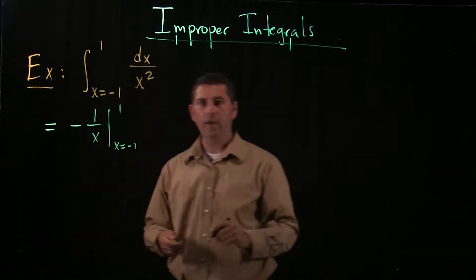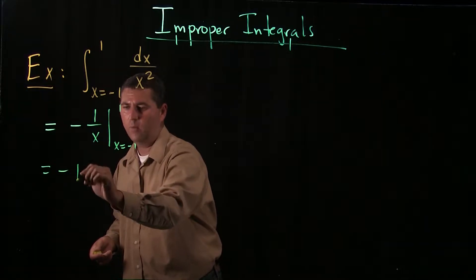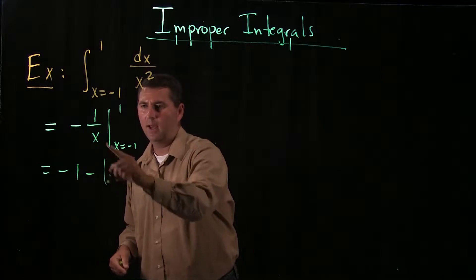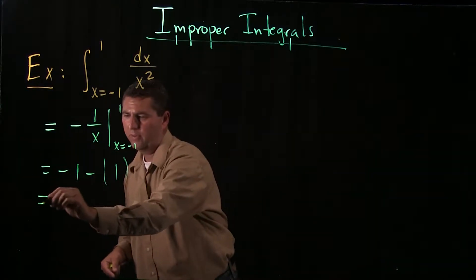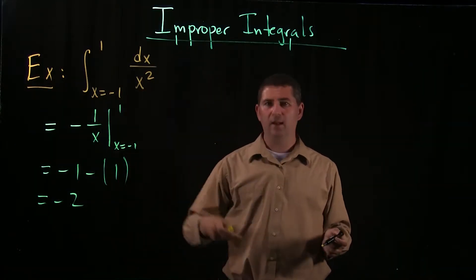An antiderivative is going to be negative 1 over x, and then I'm going to evaluate this at negative 1 and 1, find the net difference. At 1 I get negative 1, minus at negative 1 I get minus 1. So I end up with negative 2.